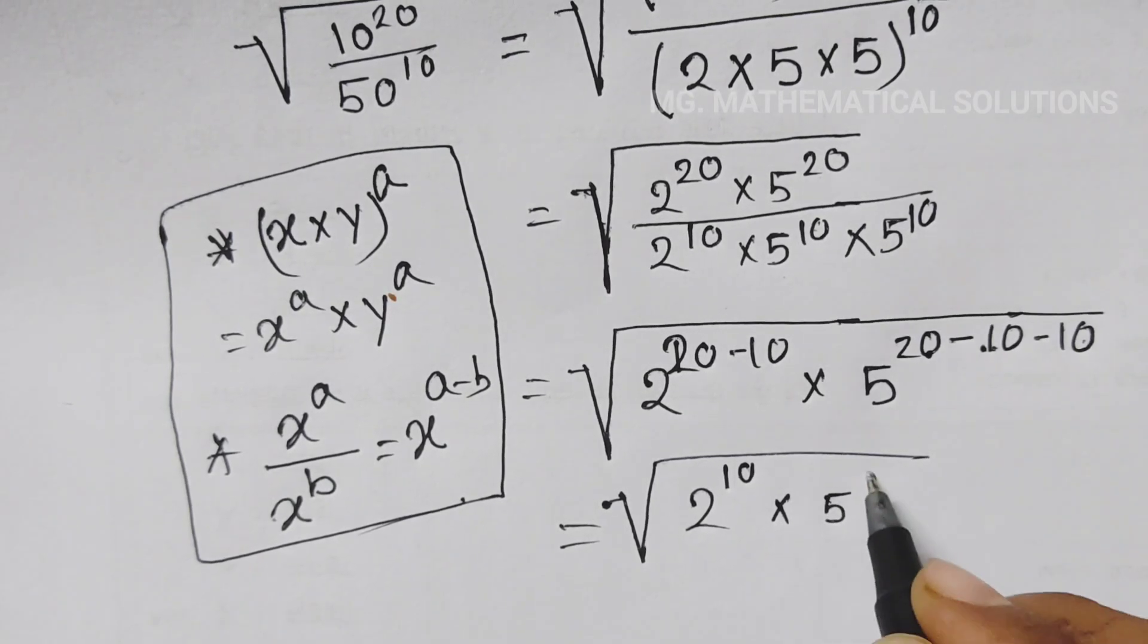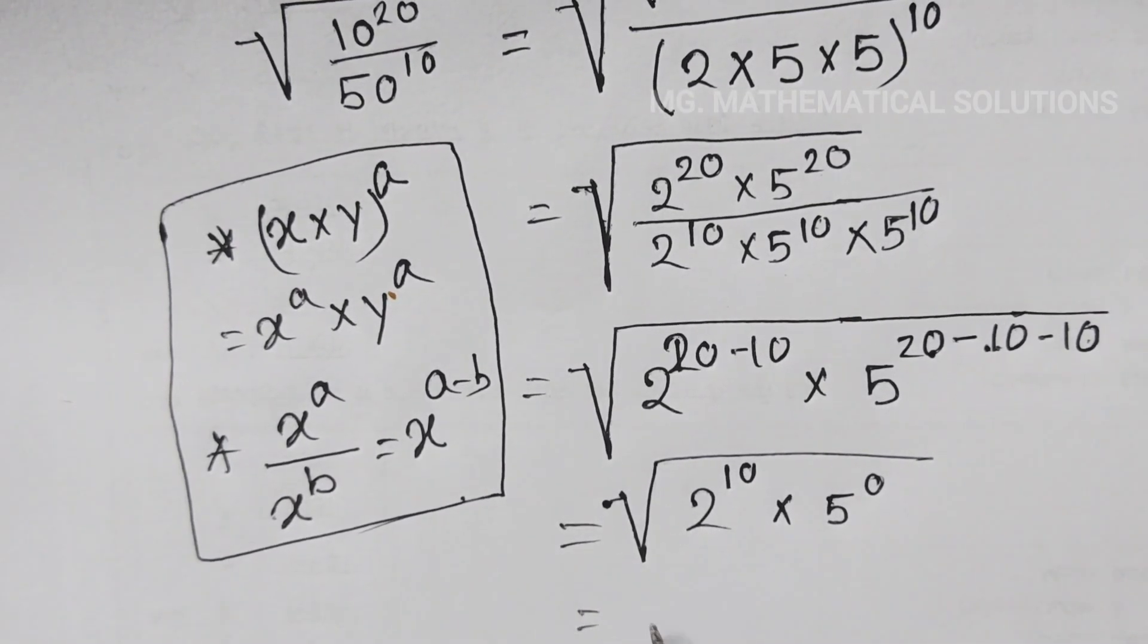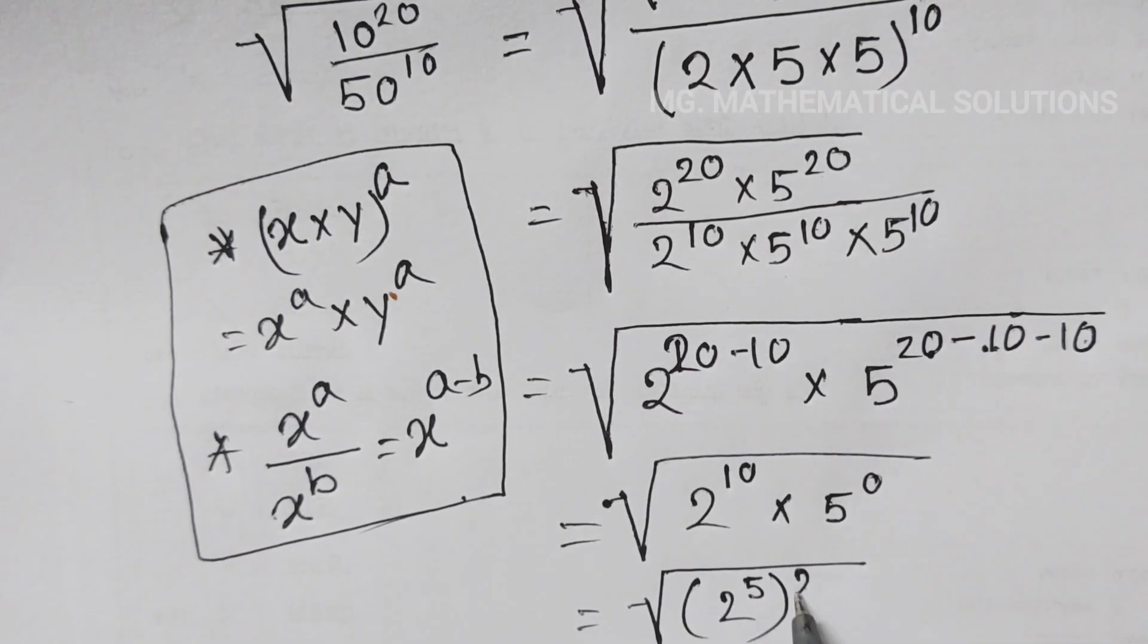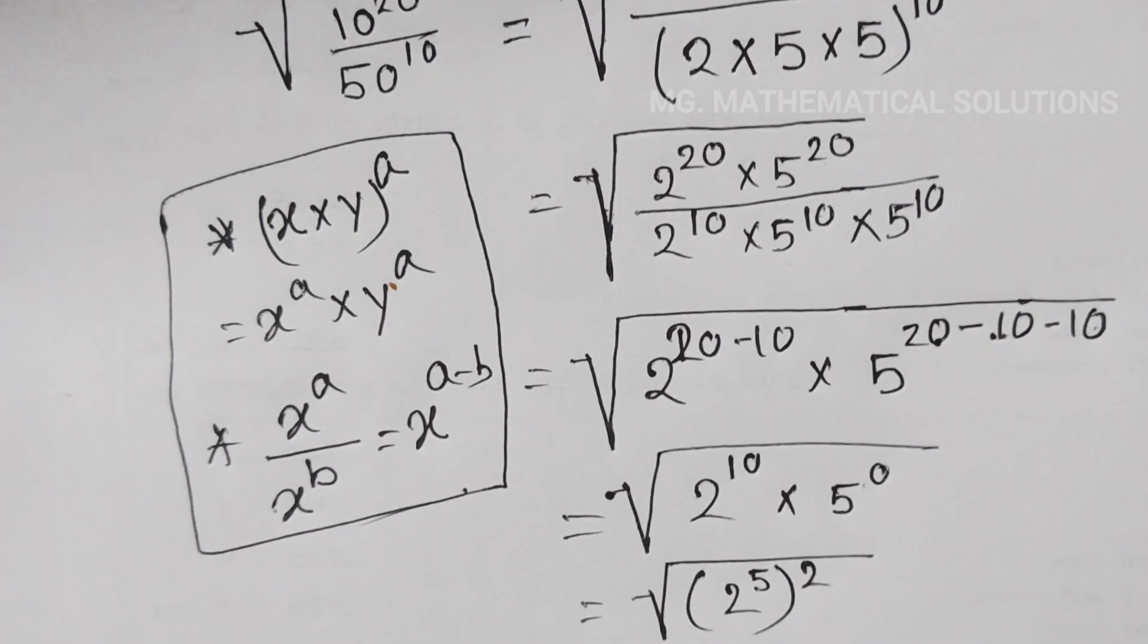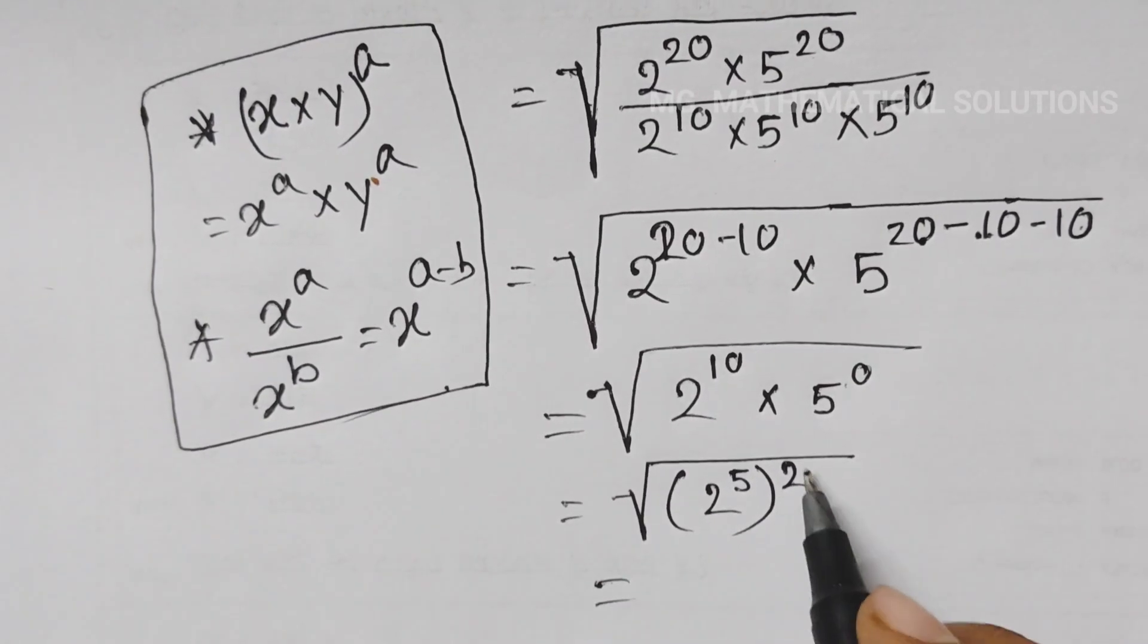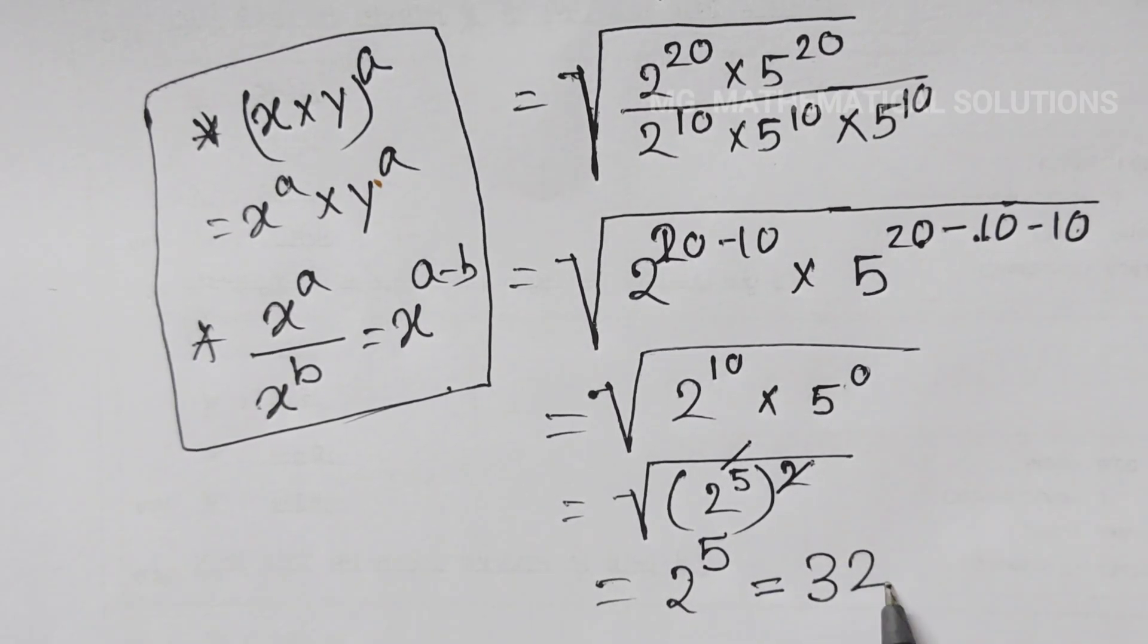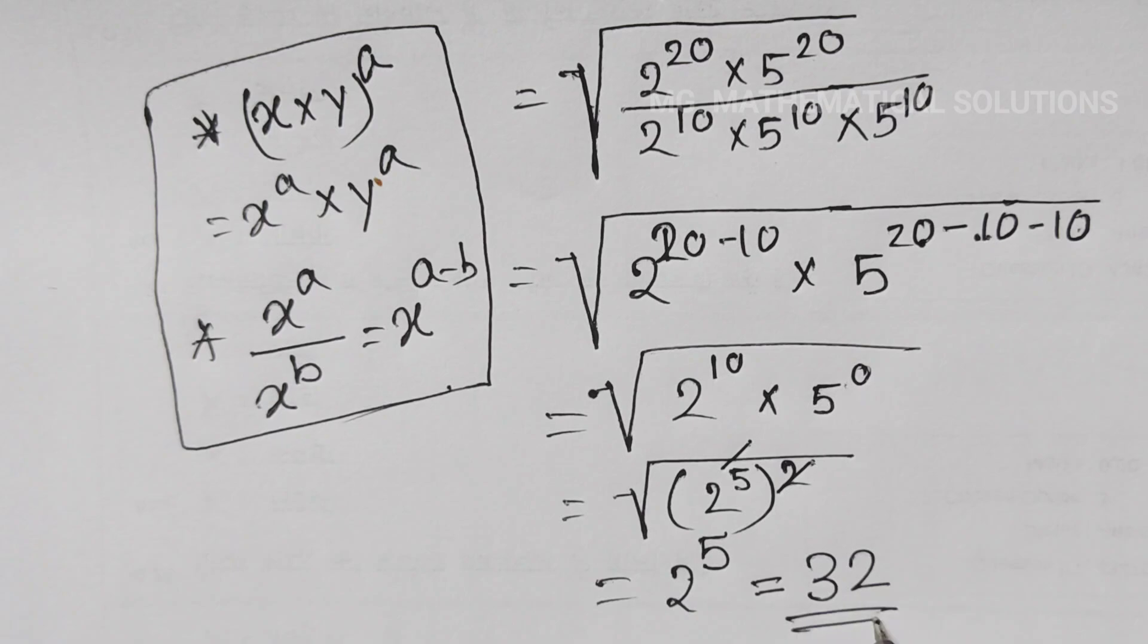This equals square root of 2 to the power 10 times 5 to the power 0. We can write this as 2 to the power 5 whole squared. 5 to the power 0 means 1, so square and root cancel. 2 to the power 5 equals 32. So this is the answer.